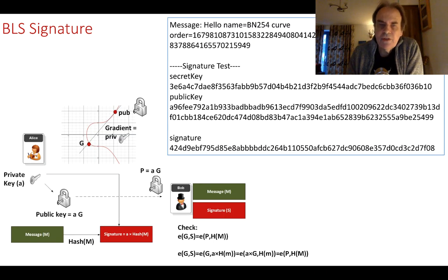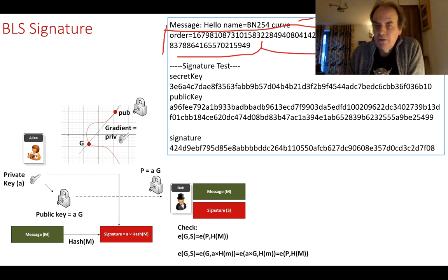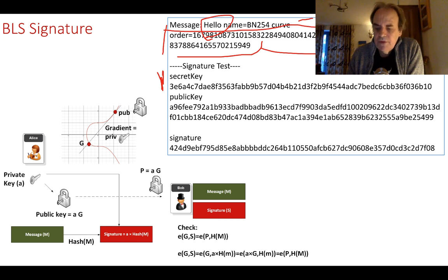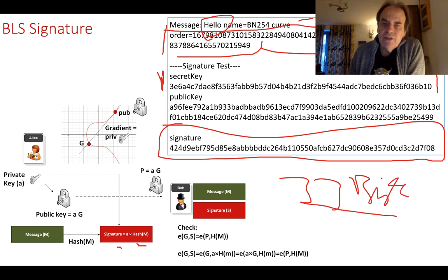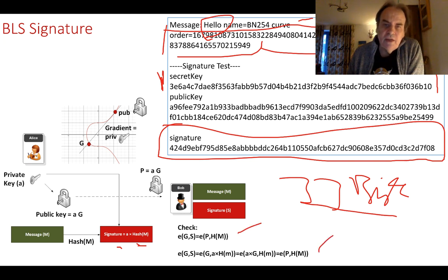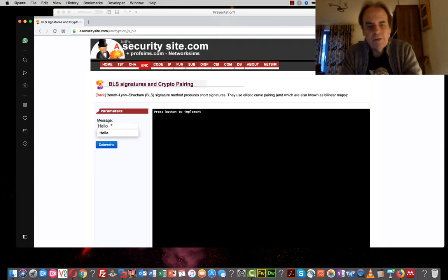Here is an example using the BN254 curve. All operations are done modulo the curve's prime order. This is Alice's secret key — 256 bits. She takes the message 'hello', multiplies the hash of the message by her secret key A, and gets the signature. This is a very small signature, only 33 bytes long — it's the x-coordinate of the elliptic curve point. To verify, we perform that pairing operation and confirm both sides match.